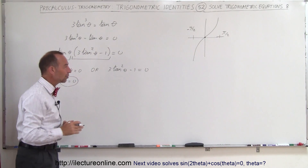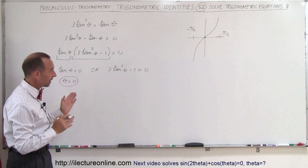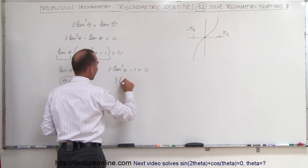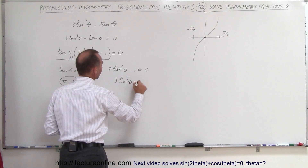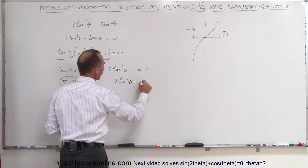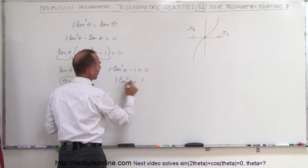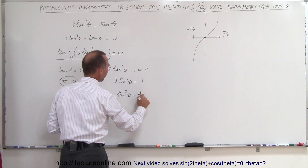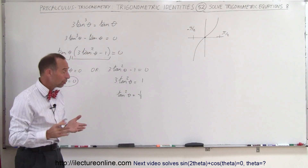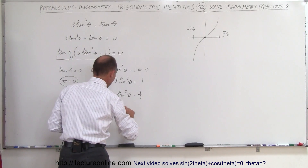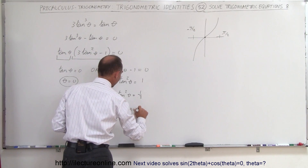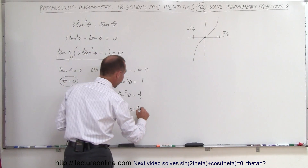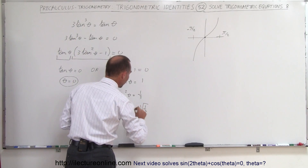For the second equation, we move the negative one over: 3tan²θ = 1. Divide both sides by three: tan²θ = 1/3. Finally, take the square root of both sides and you get tan θ equals plus or minus the square root of one-third — you can have either one.